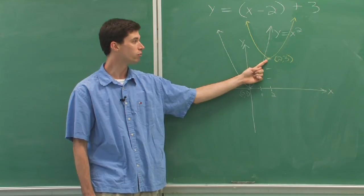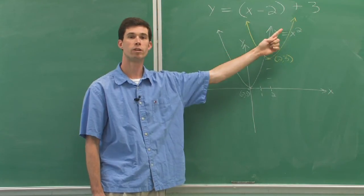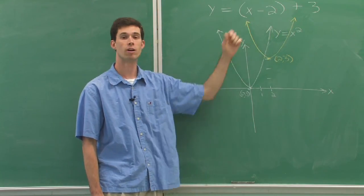This would put our final vertex at 2, 3. And we can draw the same shape graph that we had previously. And that will be the final graph that we're looking for.